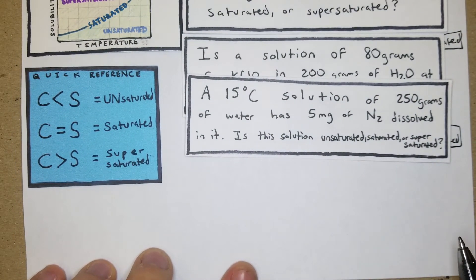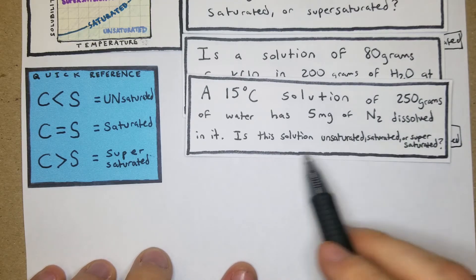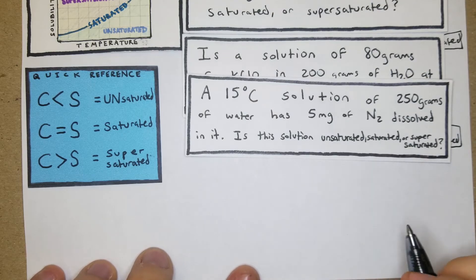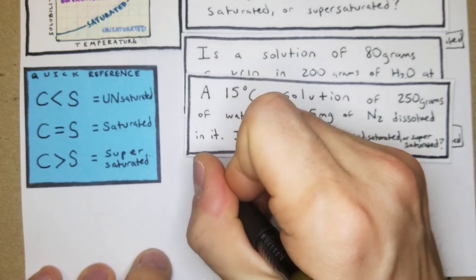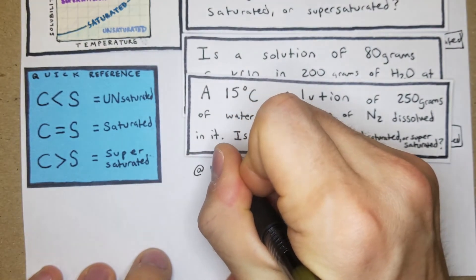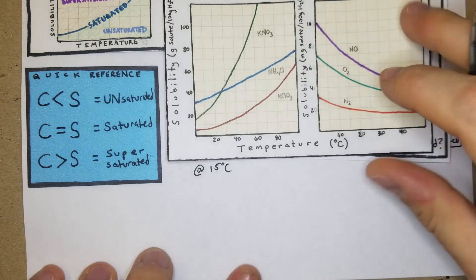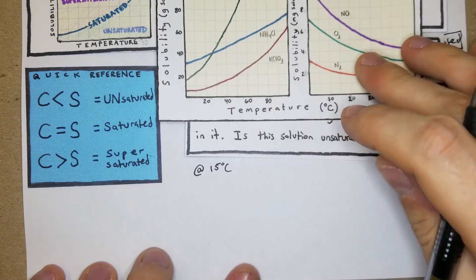A 15 degree solution of 250 grams of water has 5 milligrams of N2 dissolved in it. Is this solution unsaturated, saturated, or supersaturated? We're at 15 degrees Celsius and we're now looking at the gas chart where solubility decreases as temperature increases. We're looking at N2 at 15 degrees, so it looks like it's 2 milligrams.